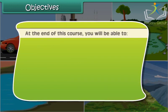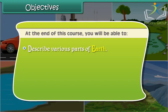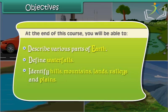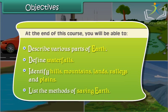At the end of this course, you will be able to: describe various parts of Earth, define waterfalls, identify hills, mountains, lands, valleys and plains, and list various methods to save our Earth.